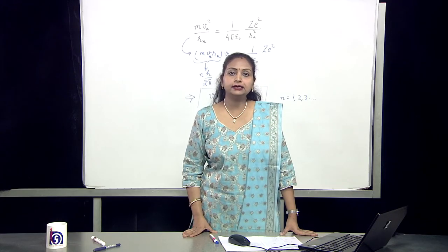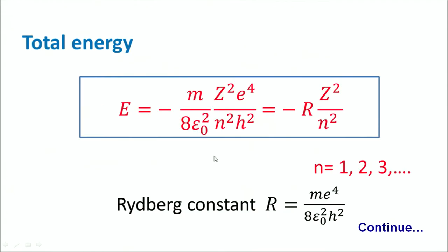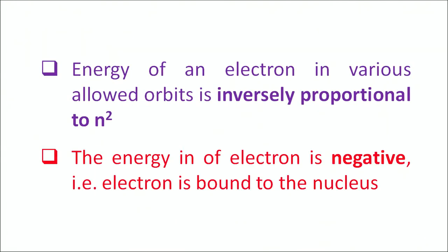We know that kinetic energy equals ½mvn². So the total energy comes out to be −½mvn². When we substitute the value of vn, we get the formula for total energy of the electron in the n-th orbit. The constant me⁴ / (8ε₀²h²) is a universal constant known as the Rydberg constant. In terms of this, the energy is given by −Rz² / n². From this, we infer that energy of an electron in various allowed orbits is inversely proportional to n².